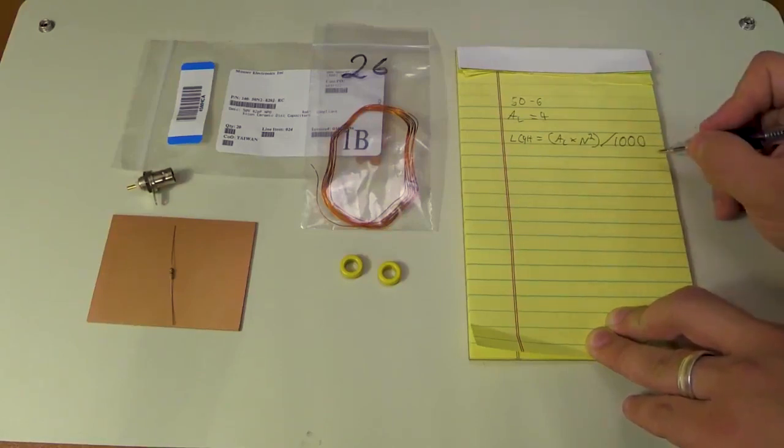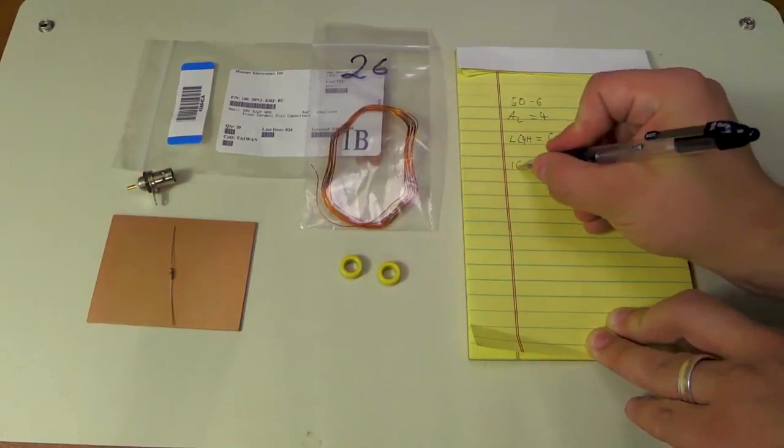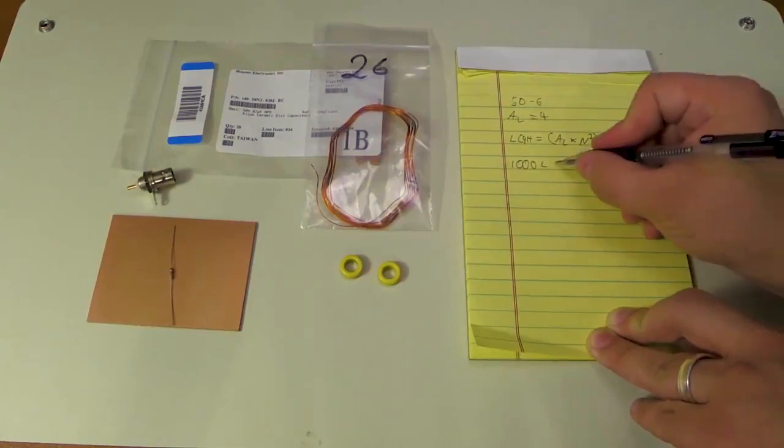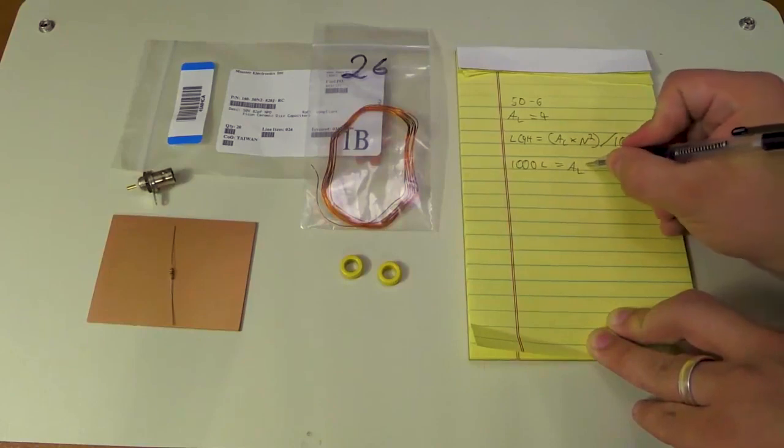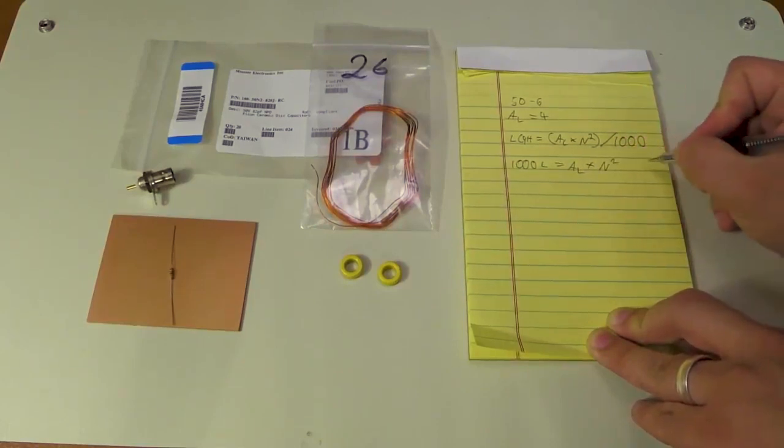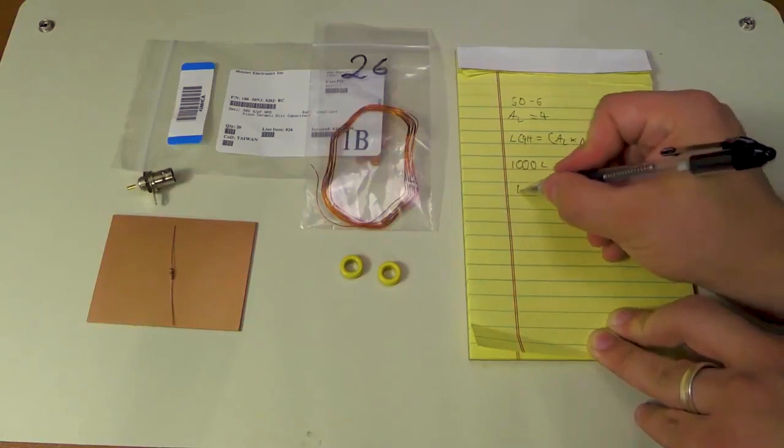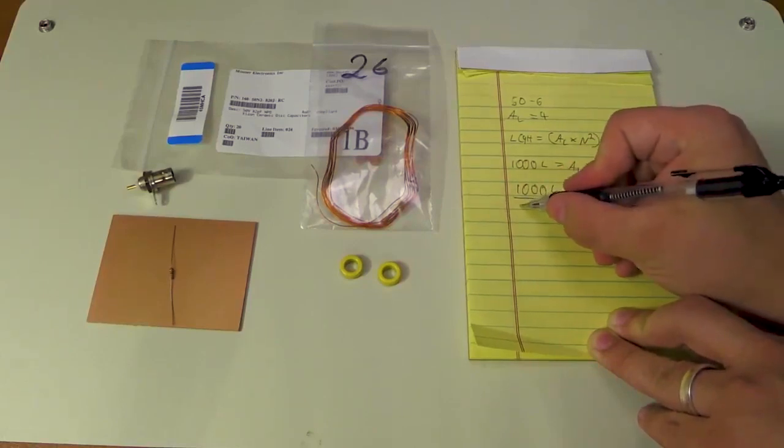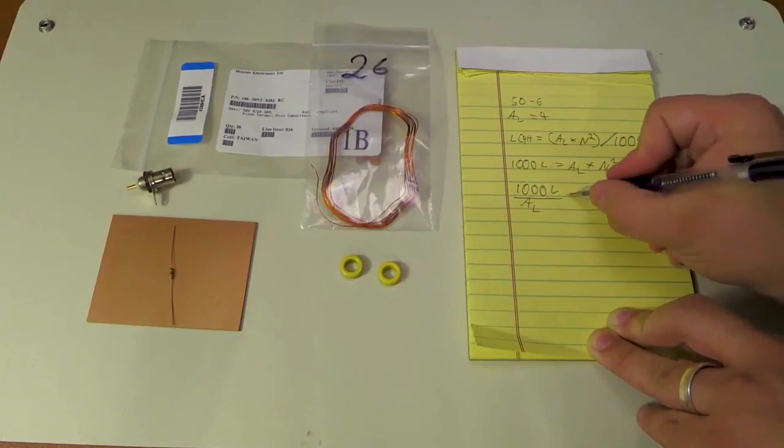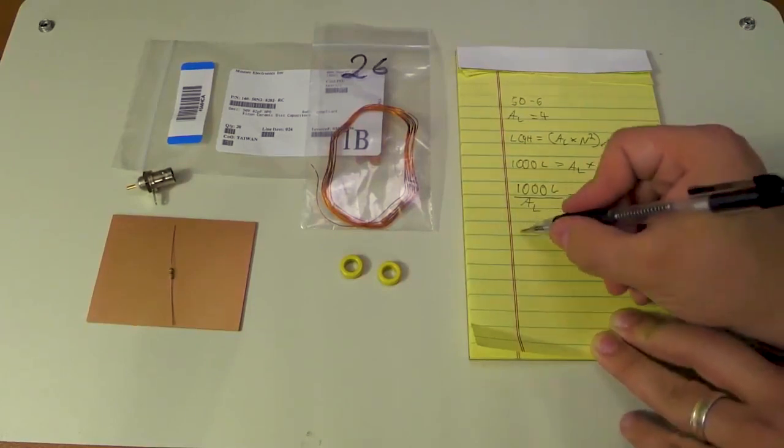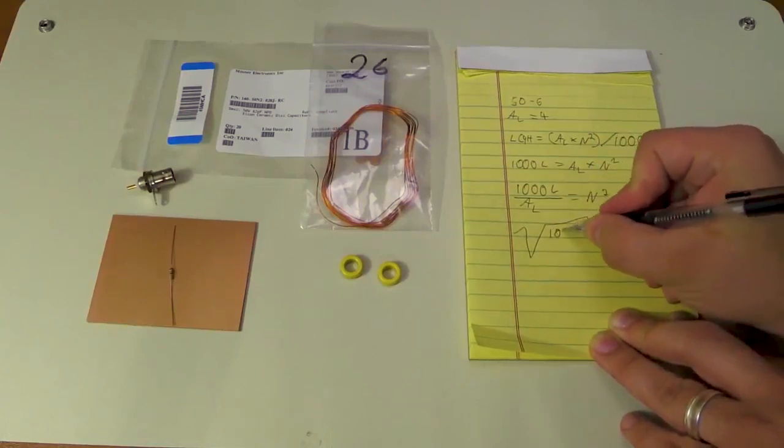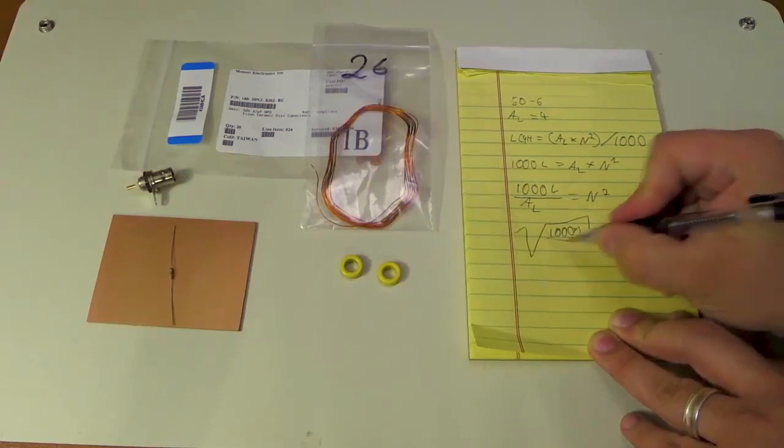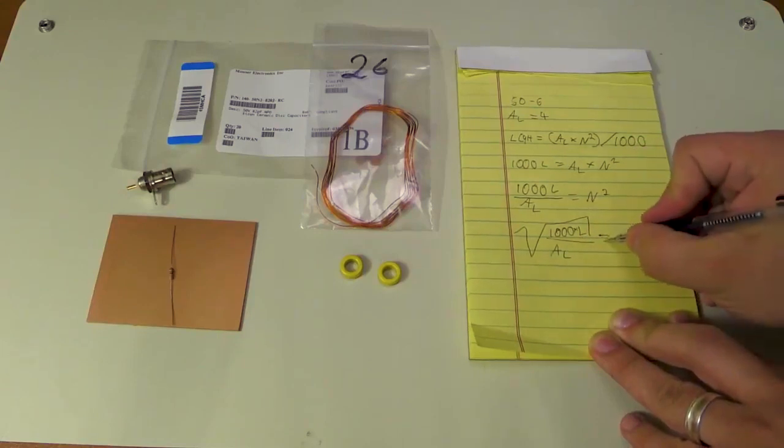So let's get started on this. Let's time the whole thing by 1,000. So 1,000 times our inductance that we want, and again, that's in microhenrys, equals AL index times N squared. So we'll just divide the whole thing by AL index. So we get 1,000 times the inductance divided by AL equals N squared. So obviously we take the square root out of both sides. So we get the square root of 1,000 times our inductance, wanted inductance in microhenrys, and that over AL index equals N.